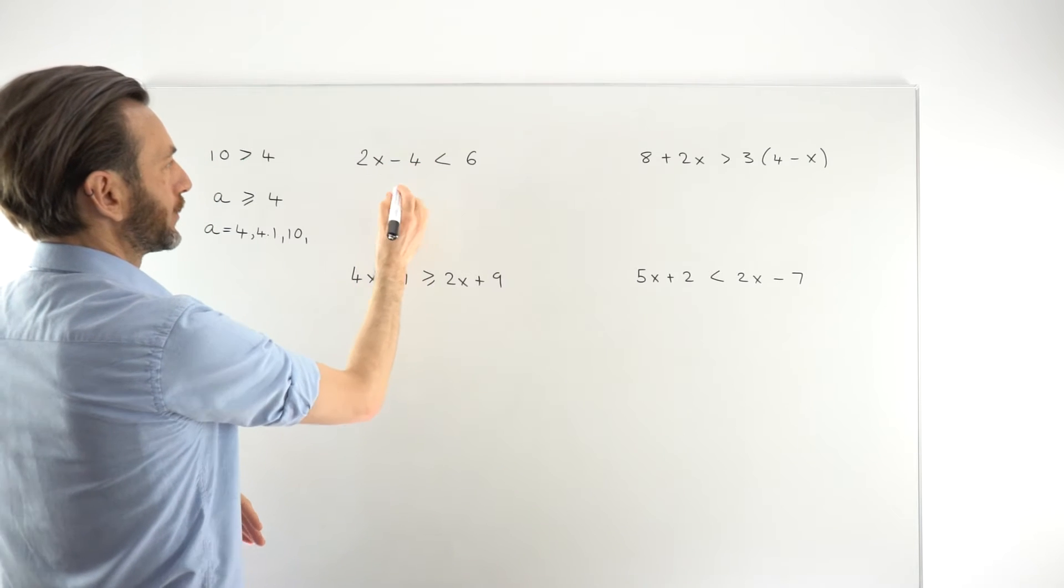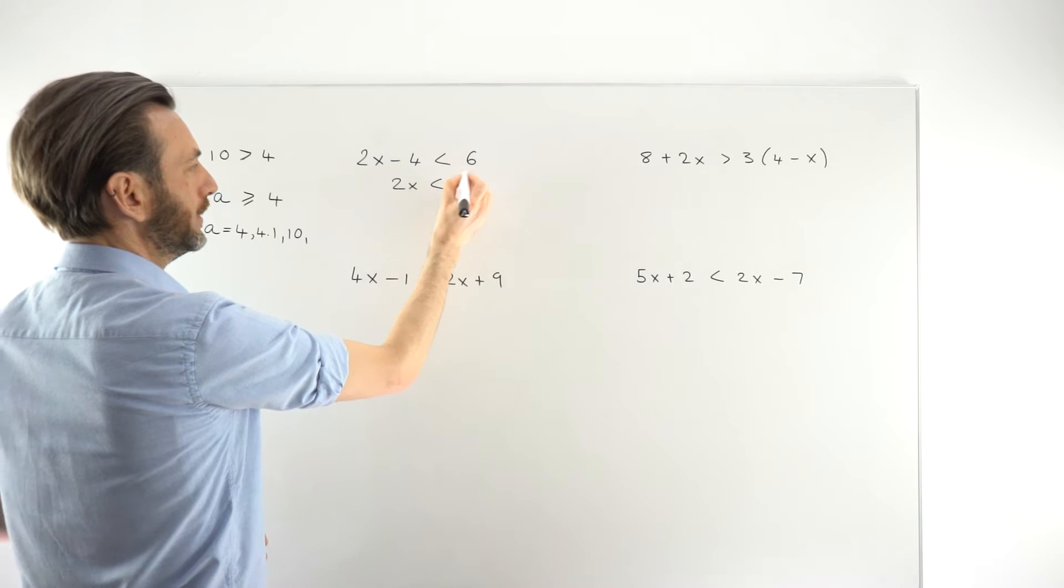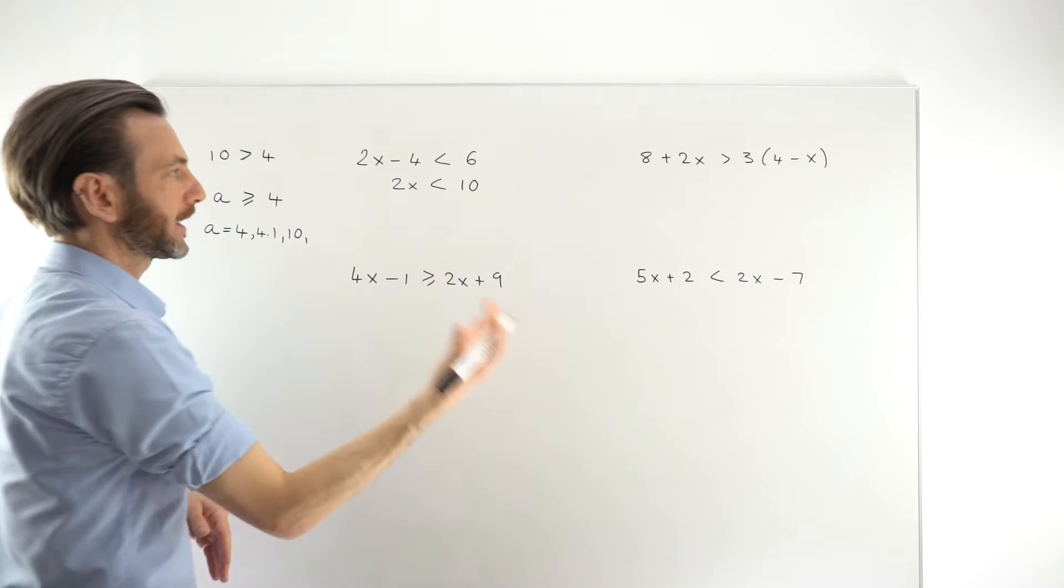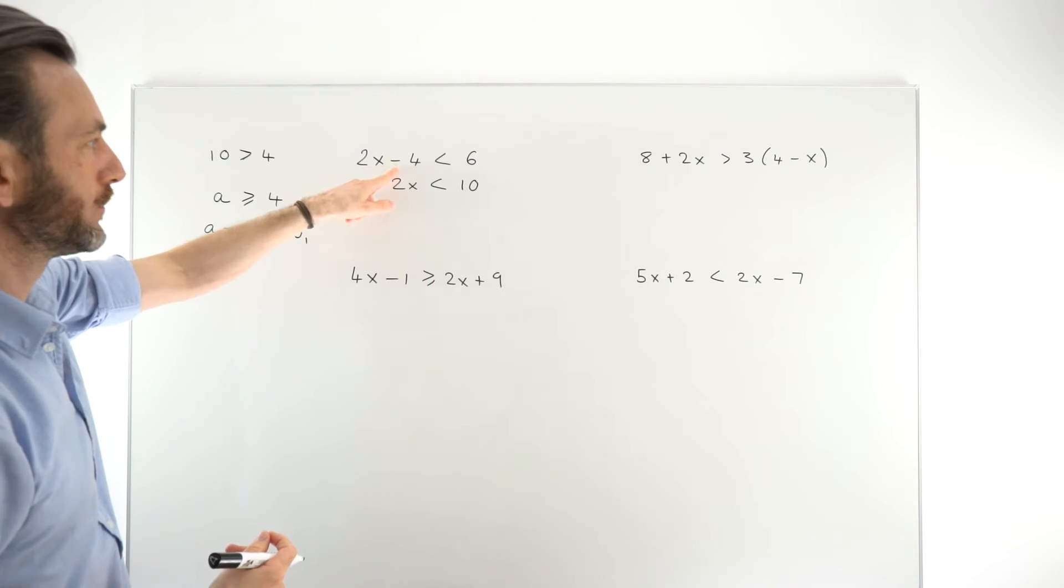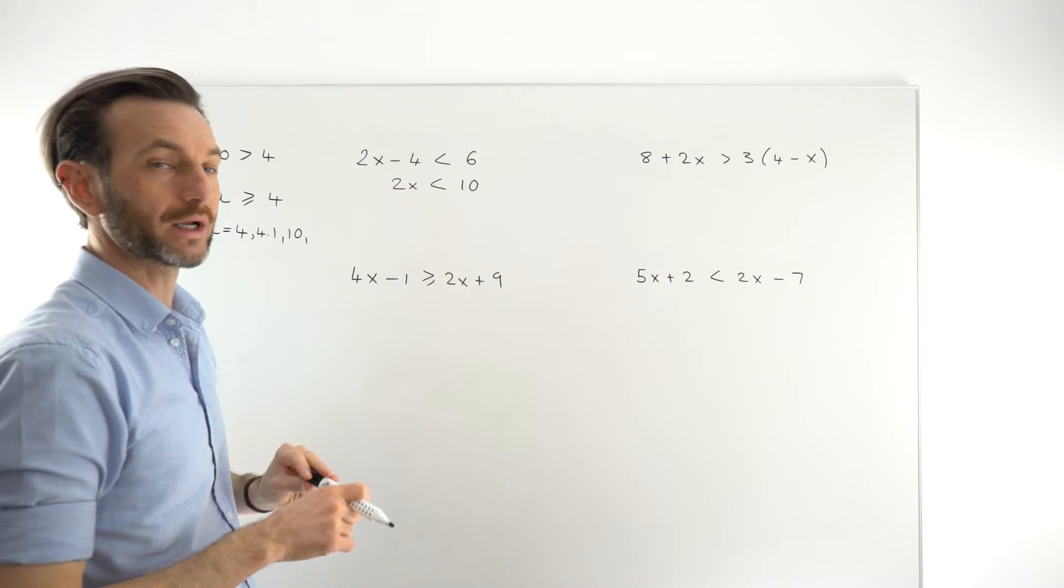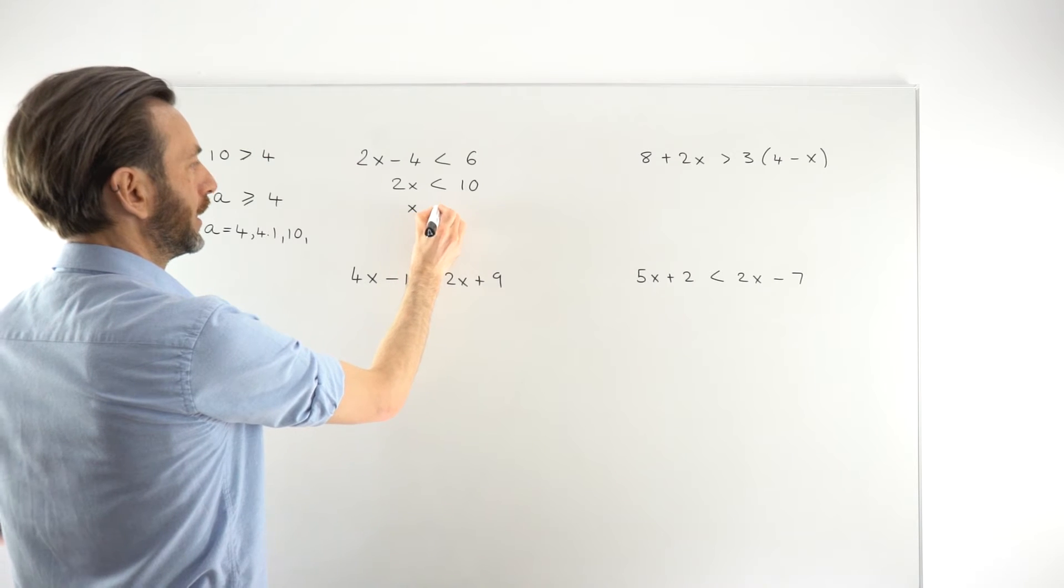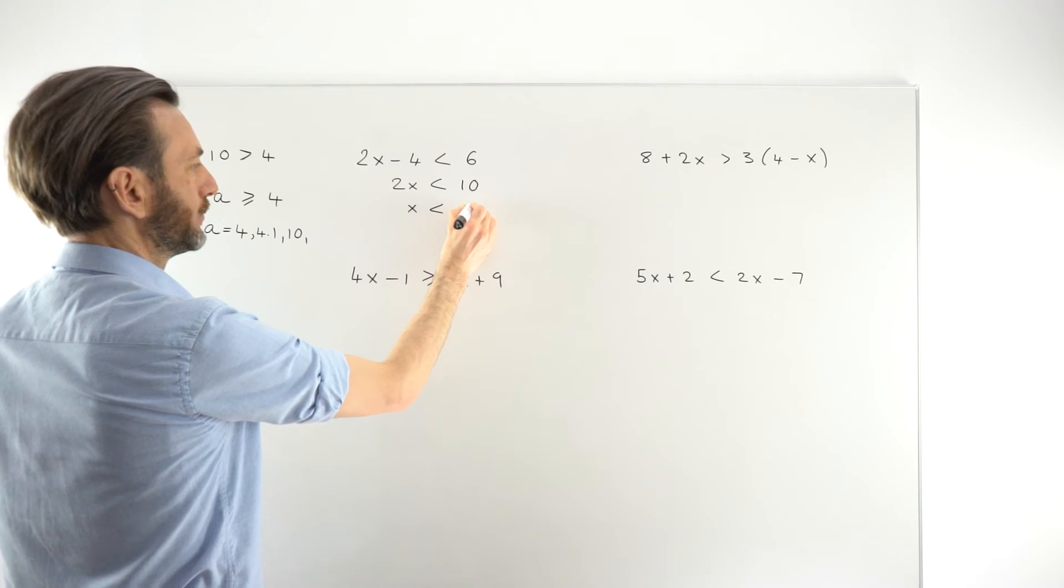Just taking that minus 4 over to the other side, we would get 2x is less than 6 plus 4, which is 10. Just like a normal equation, if you move the minus to the other side, it becomes a plus. All of those operations work in exactly the same way. Dividing both sides now by 2, just like an equation.